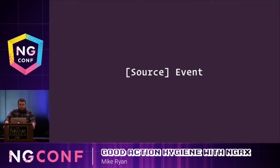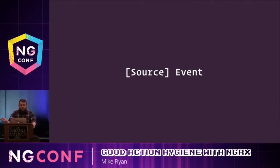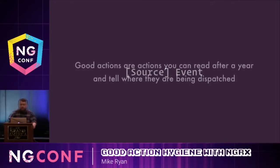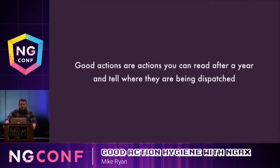Try to pick really descriptive names for your sources. If it's an interaction with a backend API, suffix that source name with "API". If it's from a component or a page, suffix it with "component" or "page" — it's going to make your life a lot easier. Good actions are actions you can read after a year and tell where they're being dispatched from.